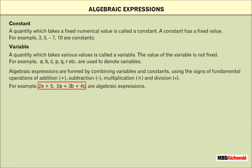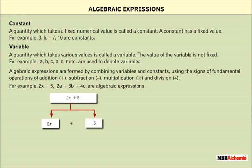In the expression 2x plus 5, 2x and 5 are terms. In the term 2x, 2 is the constant and x is the variable, and 5 is a constant.